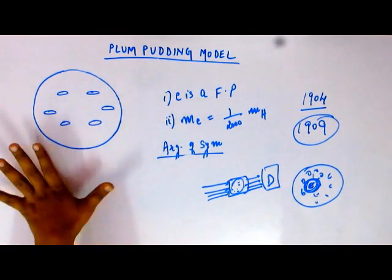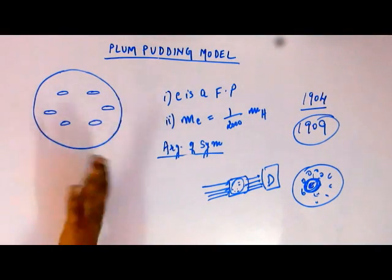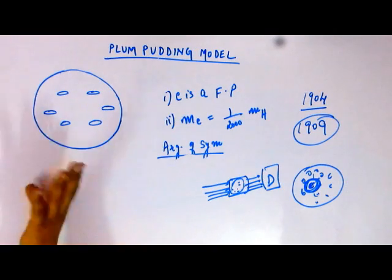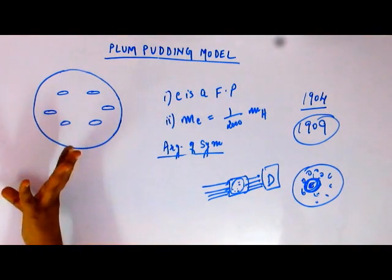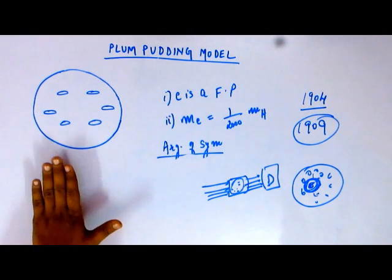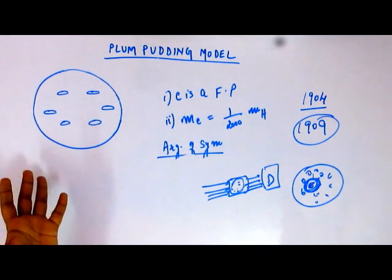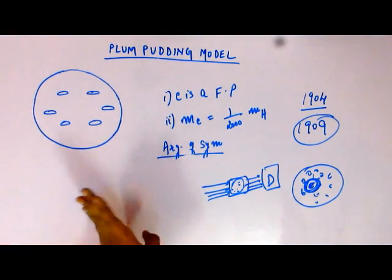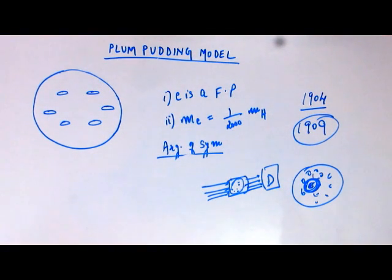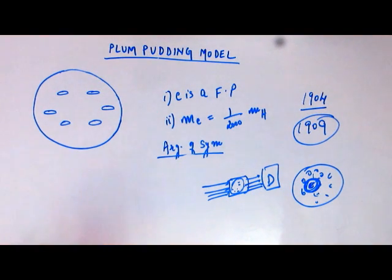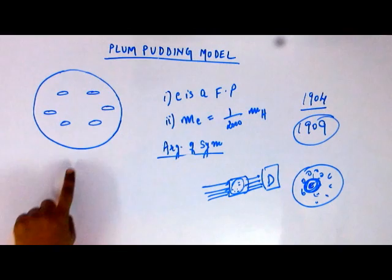The gold foil experiment revealed that the actual structure is much different from what Thomson proposed. Presently this is a discarded model — it is far from reality. But it was still a good start by J.J. Thomson. Using the information available to him, this was the best he could have come up with. The gold foil experiment was done afterwards, and the information gathered from it was not available to Thomson when he proposed his model.